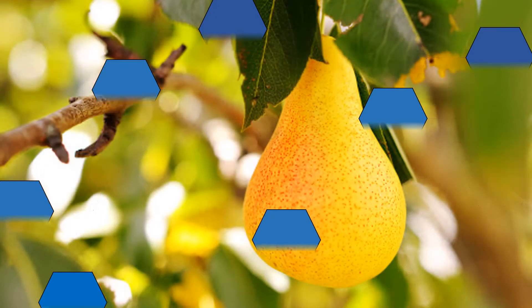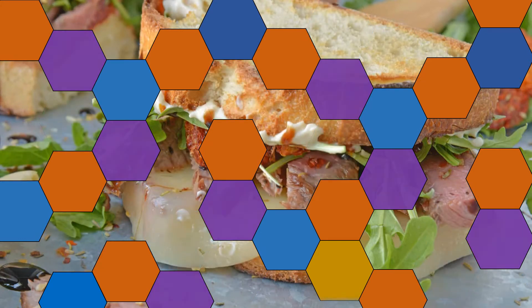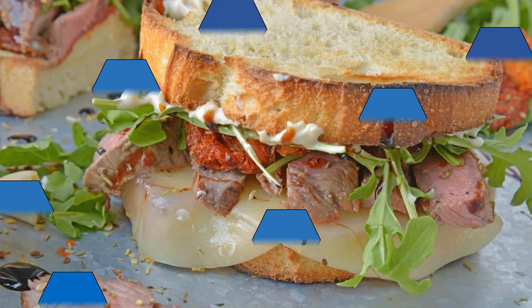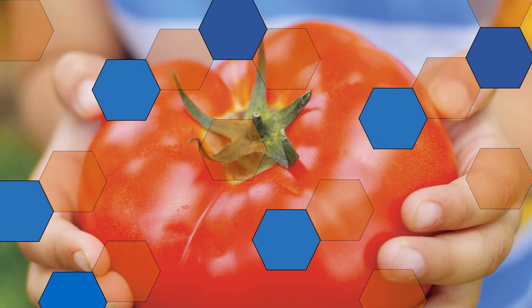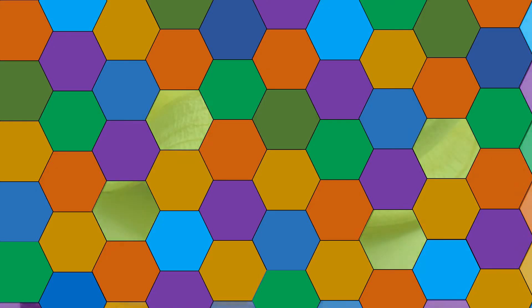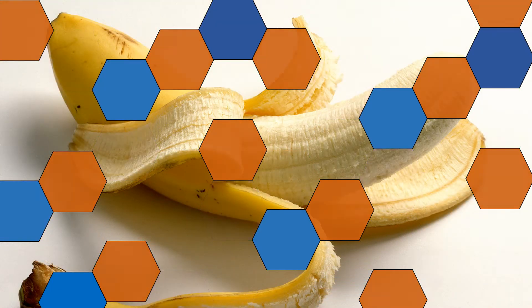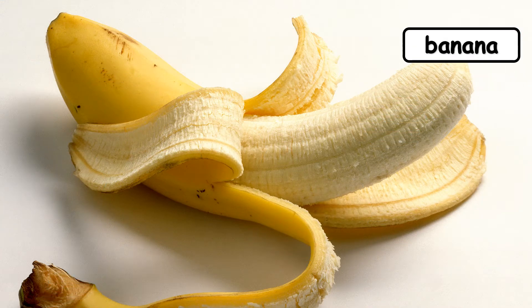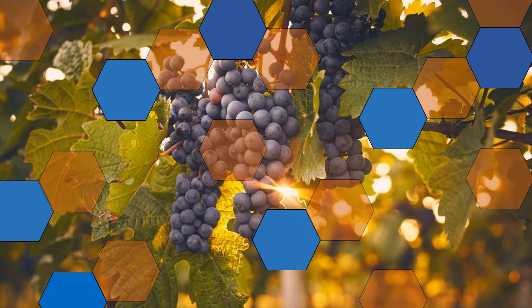It's a pear! Well done! What can you see? It's a sandwich! Very good! What's the next one? It's a tomato! Excellent! How about this? It's a banana! Really nice! Next one — these are grapes!